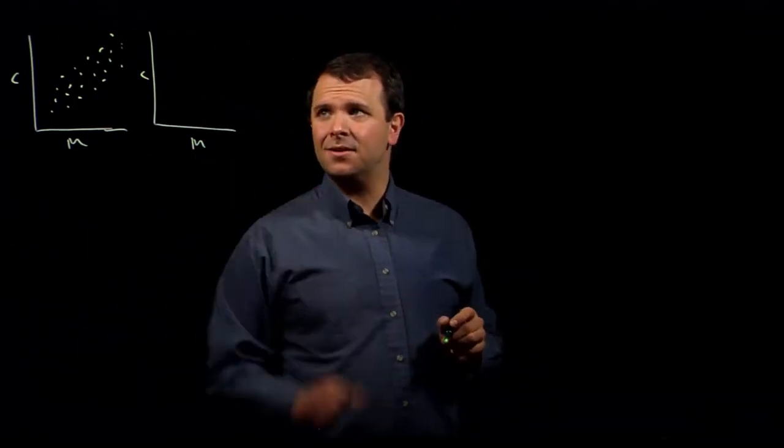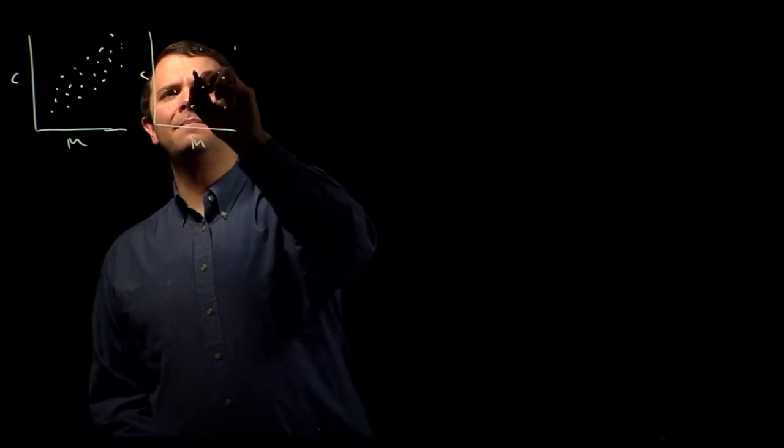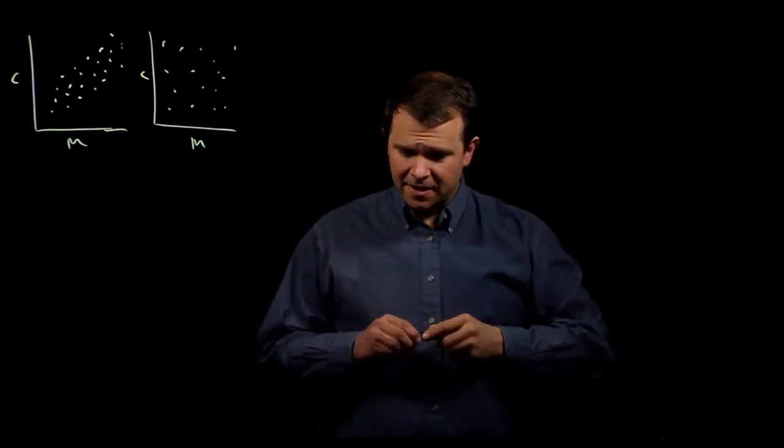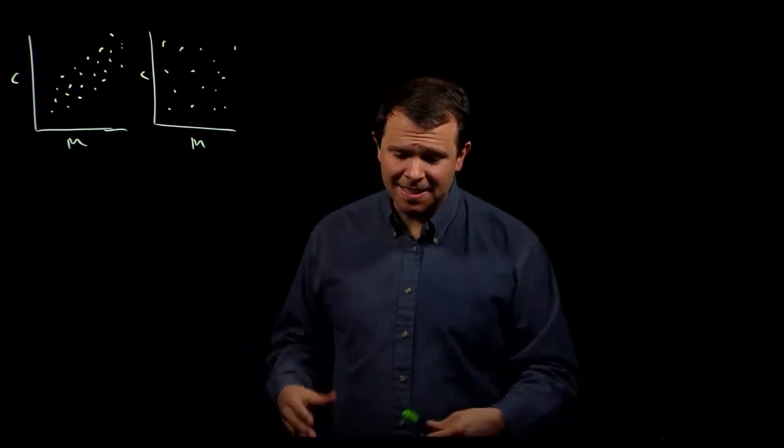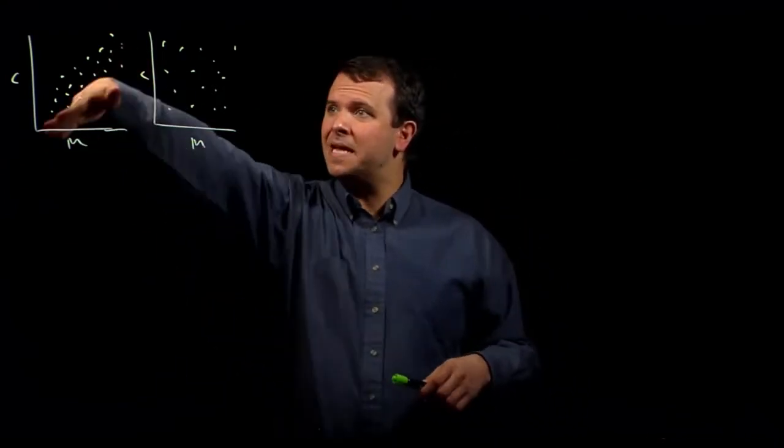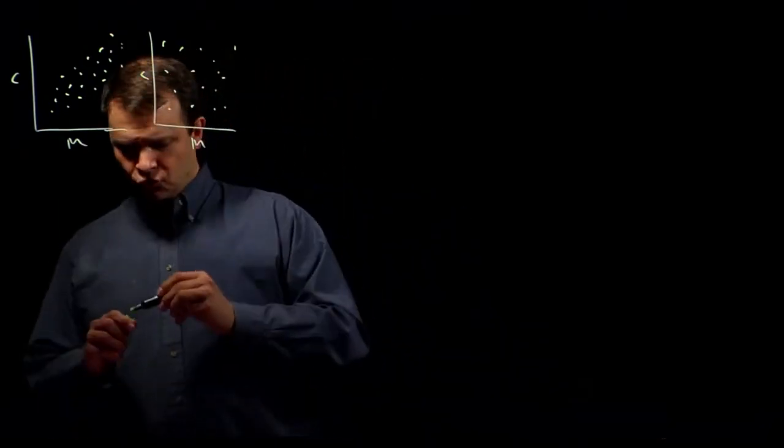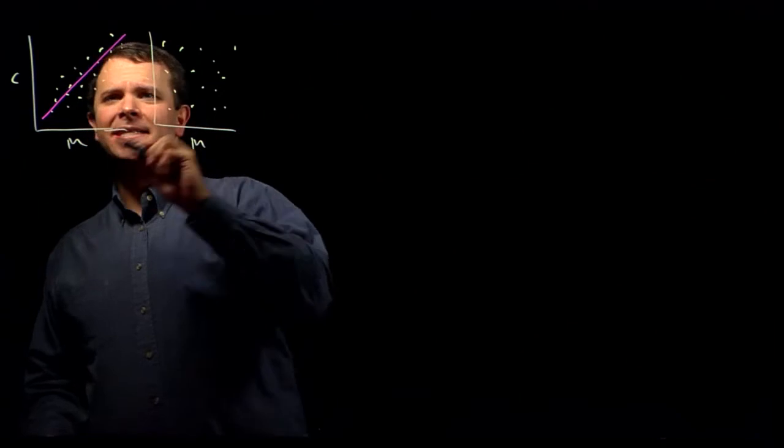Whereas in a scenario where there isn't a relationship, these observations are just scattered all over the place. And so now, in this first one where there is this kind of relationship, there seems to be a linear relationship here, and you can actually draw a line that fits this data.